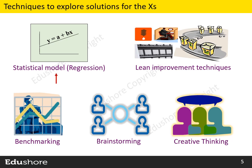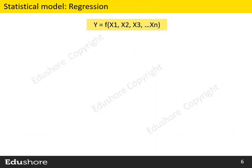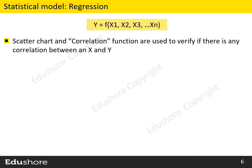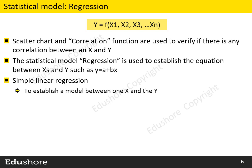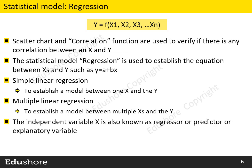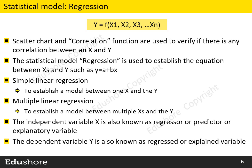Let us look at the first technique: Regression. You may recall that in the Analyze Phase, we understood that the scatter chart and the correlation function are used to verify if there is any correlation between an X and Y. The statistical model regression is used to establish the equation between the X's and the Y, such as Y = A + B×X. We use Simple Linear Regression for one X, and Multiple Linear Regression to establish a model between multiple X's and Y. In regression terminology, the independent variable X is also known as the Regressor, Predictor, or Explanatory Variable, and the dependent variable Y is also known as Regressed or Explained Variable.